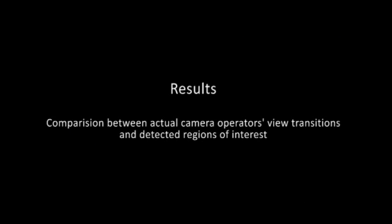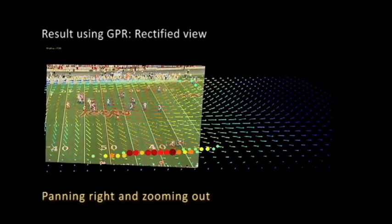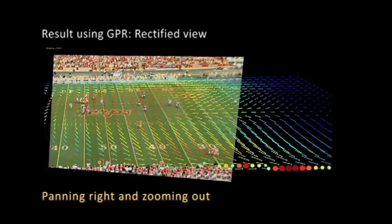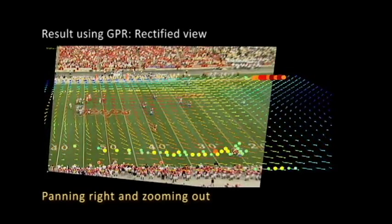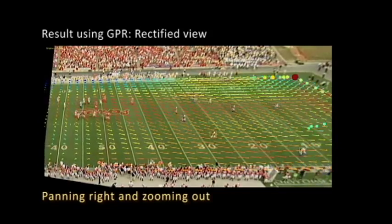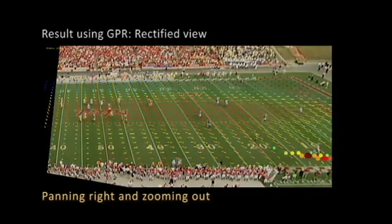In the following videos, we show the correlation between actual camera operator movement and the regions of interest predicted by our approach. Here we see that our predicted points lie outside of the frame on the top and bottom right side of the screen, which anticipates the operator panning right and zooming out.